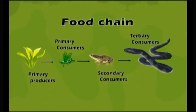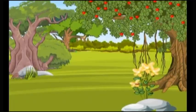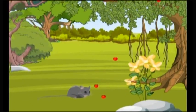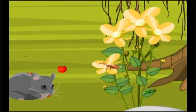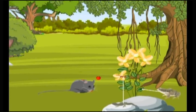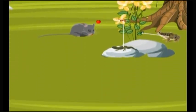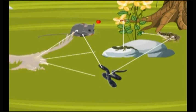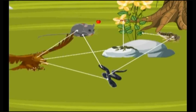In nature, the food relationships are not so simple and cannot be explained by a single food chain. For example, rats and insects eat seeds and other plant parts; insects are eaten by frogs and lizards; rats and frogs are eaten by snakes; lizards and snakes are eaten by birds. Thus, a single plant or animal may become food for more than one animal, and an animal may consume more than one type of food depending on its taste and the availability of food in the ecosystem.